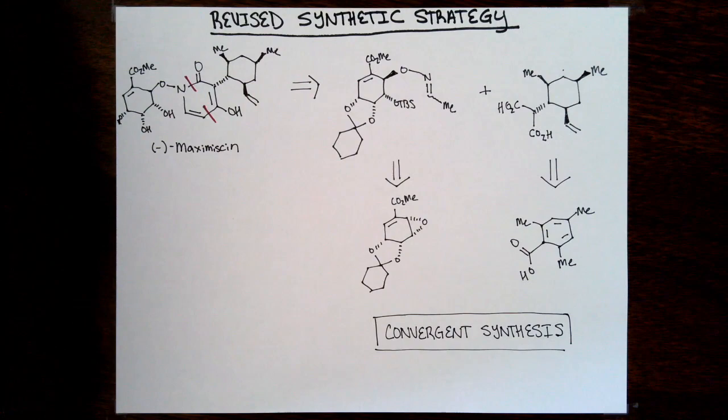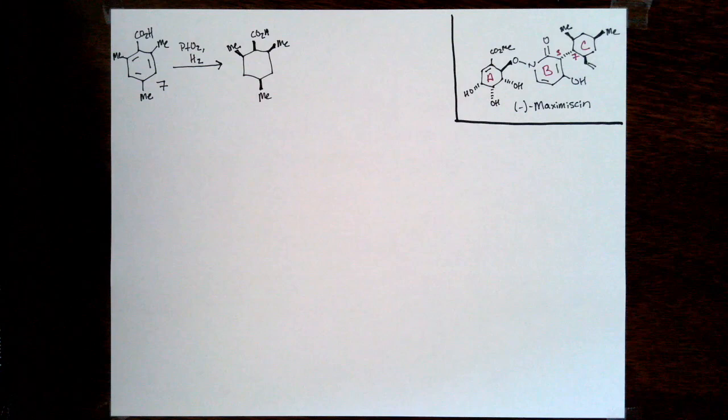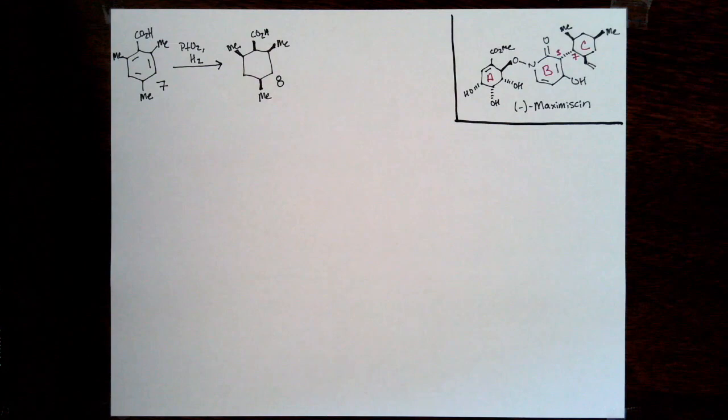By the convergent approach, we mean they synthesized two key fragments separately and then brought them together through a key synthetic step. This synthetic step is the formation of the pyridone heterocycle. Jumping into the synthesis, the group started with a really simple shikimic acid-derived carboxylic acid and did a diastereoselective hydrogenation with Adam's catalyst.